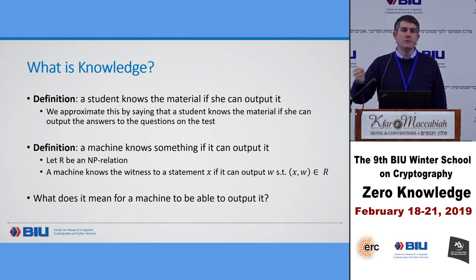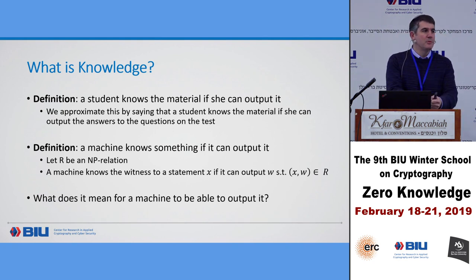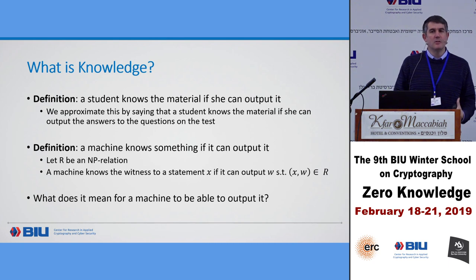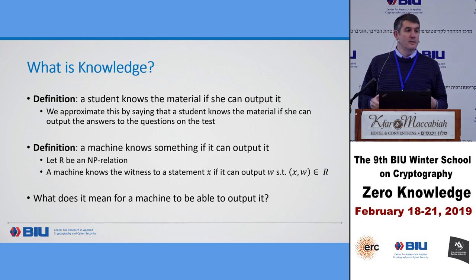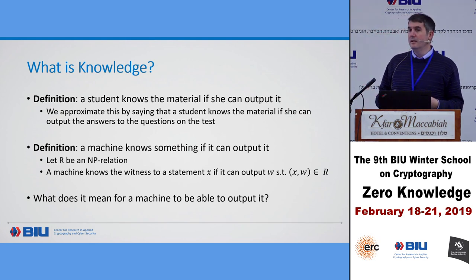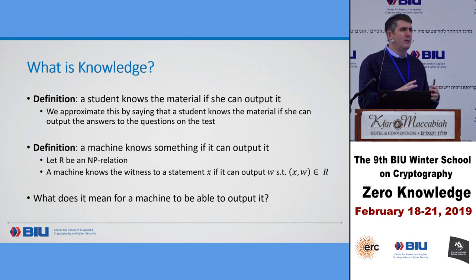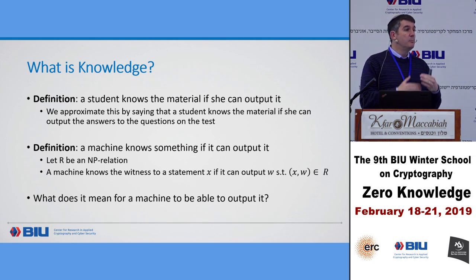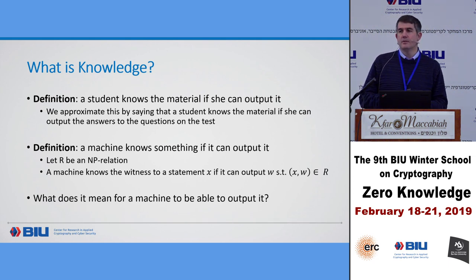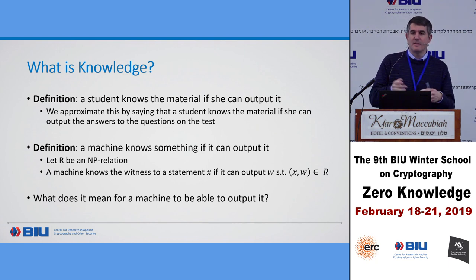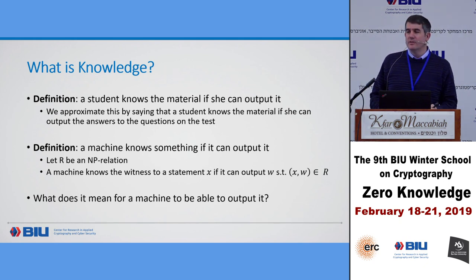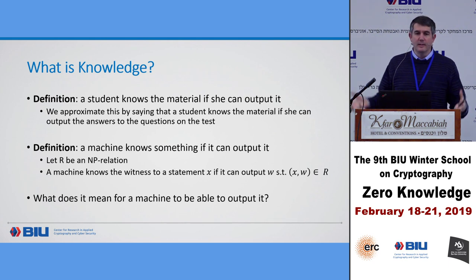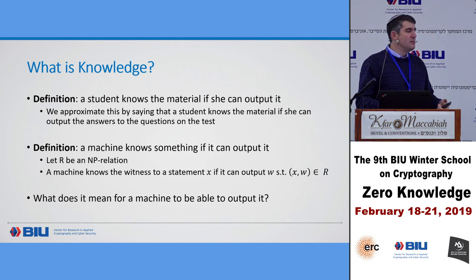We want to know if a machine running a zero knowledge proof — sending commitments, receiving challenges, opening commitments — also knows the witness. That machine is not just outputting the witness; it's doing a lot of other stuff. So here's the first attempt: we say machine M knows the witness if there exists a machine M prime who outputs the witness itself. The problem is: what's the relation between M prime and M? There always exists some machine that outputs a witness for a statement, so this is completely meaningless without a connection.